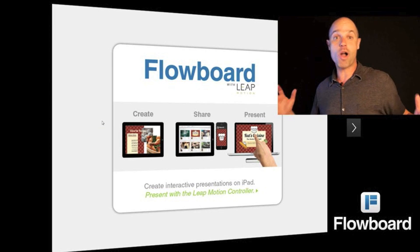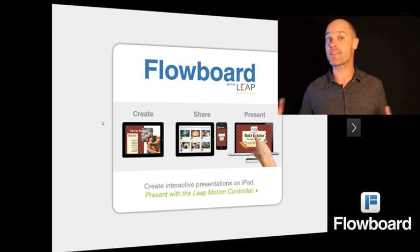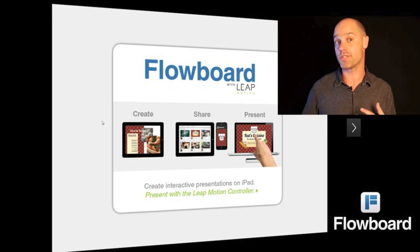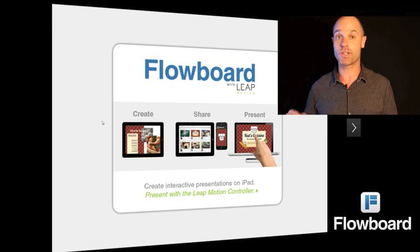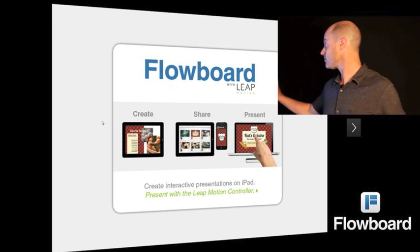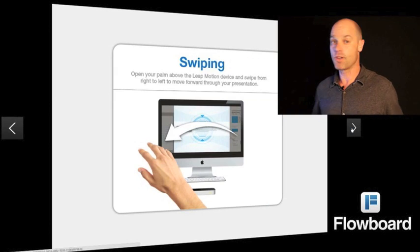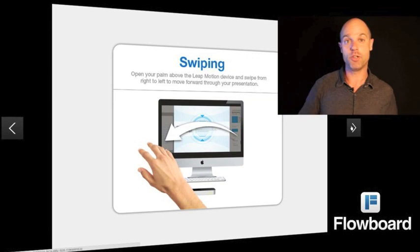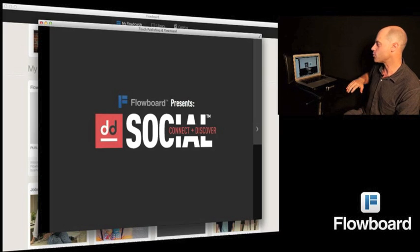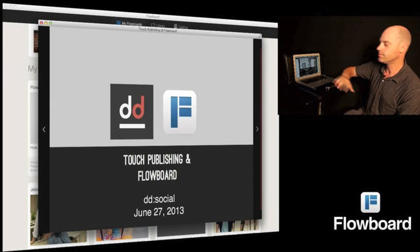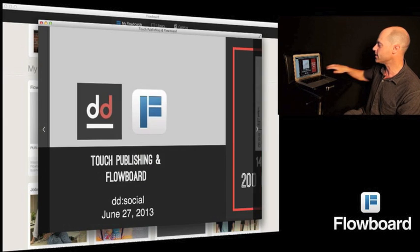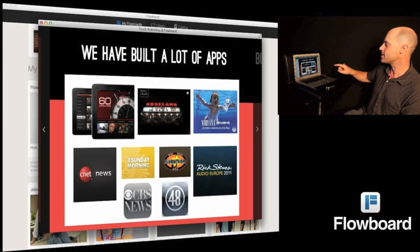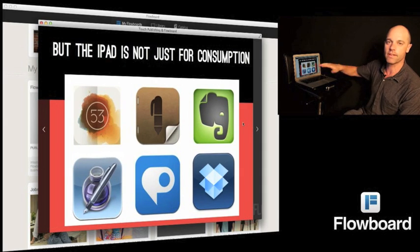Now I'm going to walk you through the gestures you need to control the FlowBoard Viewer using Leap Motion Controller. First off is the swipe. You make a hands down, palm down gesture just like that, and that will take you forwards and backwards through different screens or image galleries.